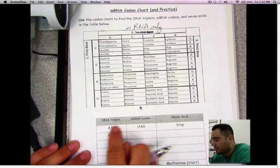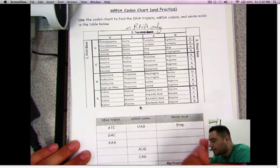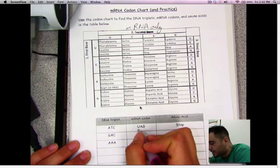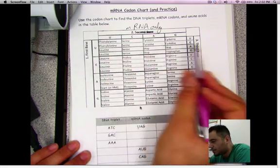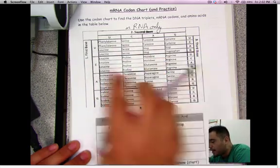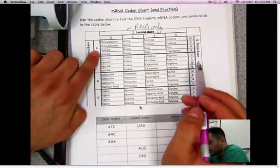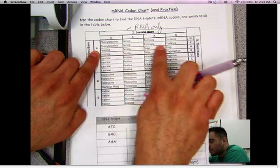So we don't use this chart for DNA, only for mRNA. Let's look at the first base. The first base is U, so I look where it says first base over here. I keep my finger on there, and then the second base is A. When it says U, I'm looking at the first row, and the second base is A.